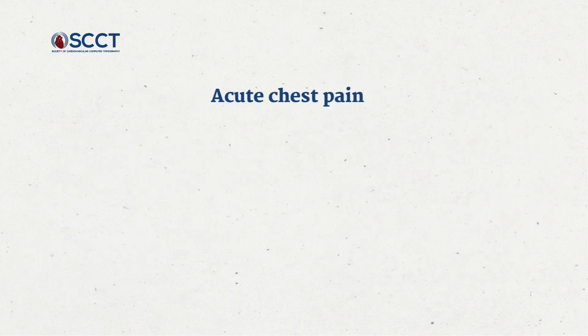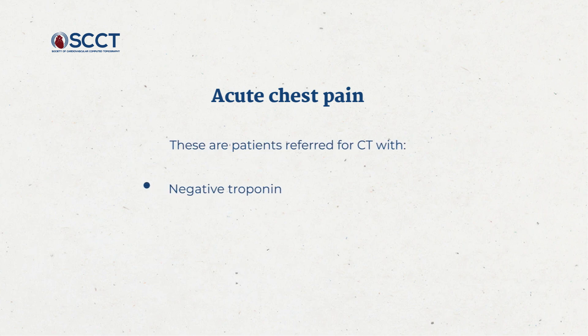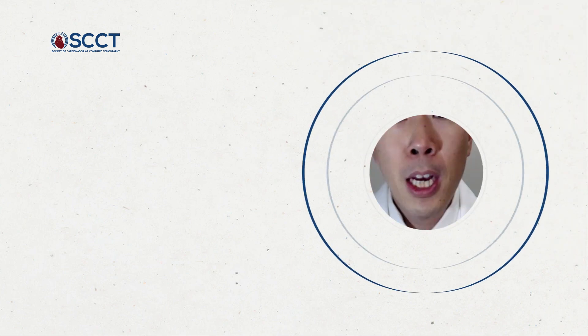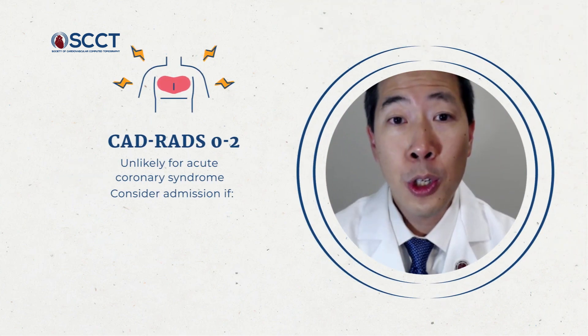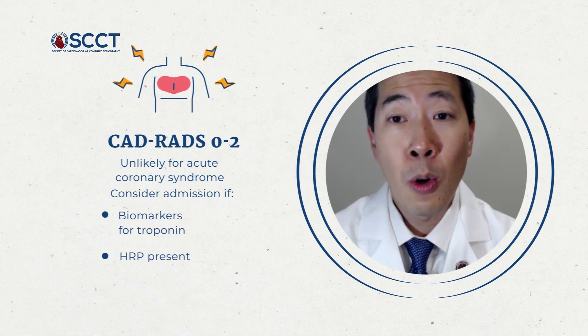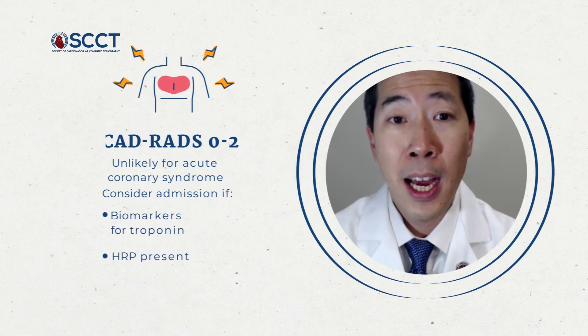Moving from stable chest pain to acute chest pain: these are patients referred to CT with a negative troponin, a negative or non-diagnostic ECG, and low to intermediate risk. The stenosis categories stay the same but with different interpretations. Patients presenting with acute chest pain are interpreted as highly unlikely or unlikely for acute coronary syndrome at category zero to two. Management considerations for acute chest pain include incorporating biomarker and troponin, as well as considering admission or if there is high-risk plaque present.